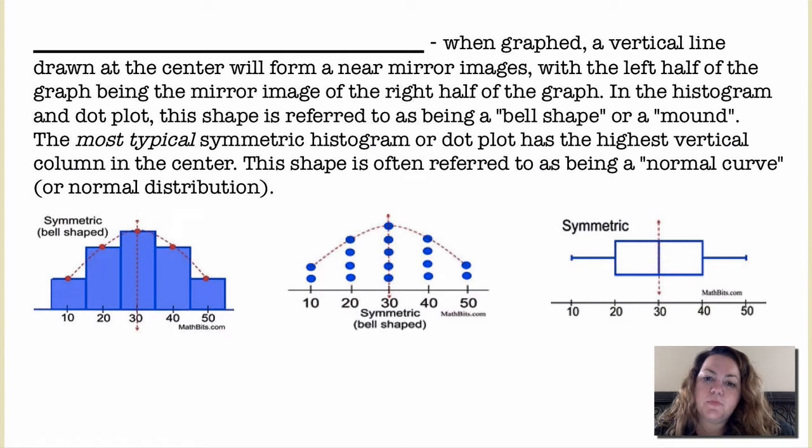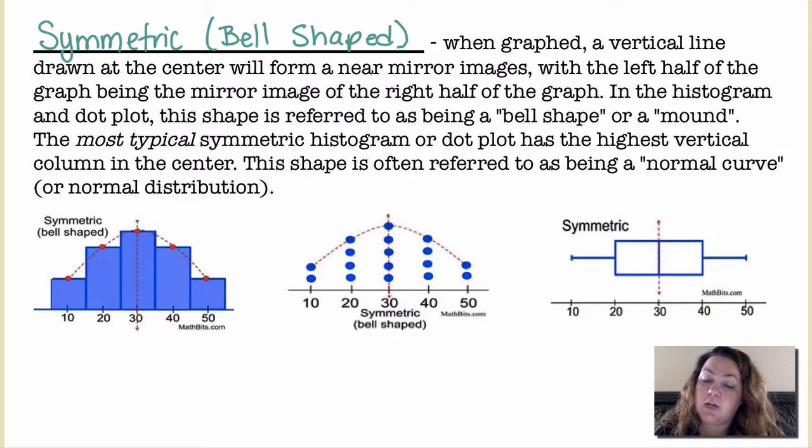A symmetric bell-shaped distribution is when graphed, a vertical line drawn at the center will form a near mirror image with the left half of the graph being the mirror image of the right half of the graph. In the histogram and dot plot, this shape is referred to as being bell-shaped or a mound.